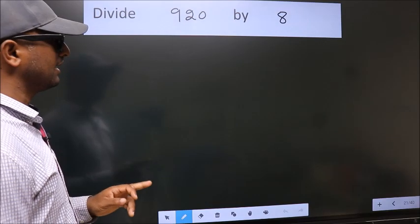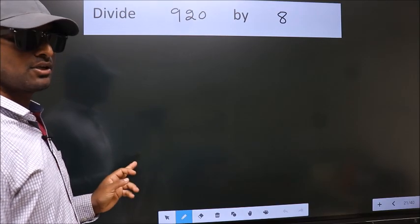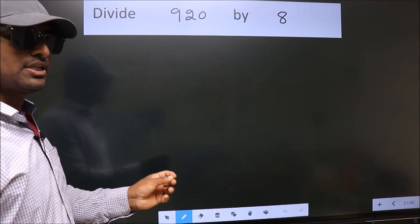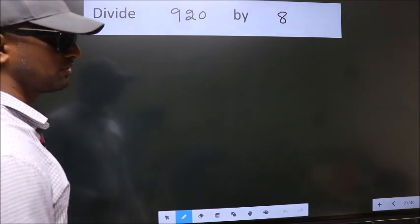Divide 920 by 8. To do this division, we should frame it in this way.